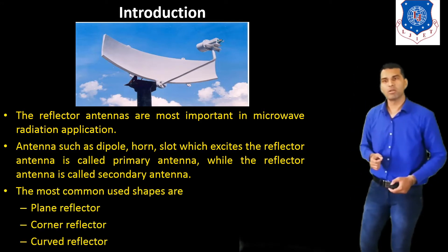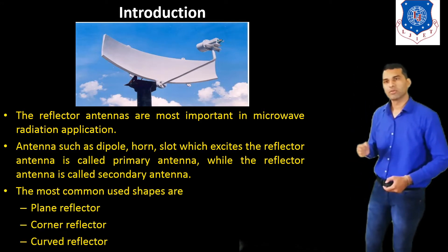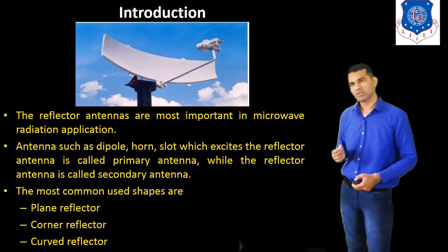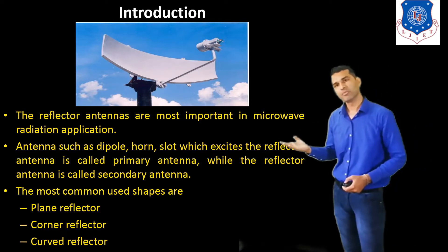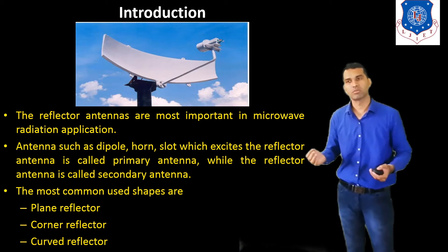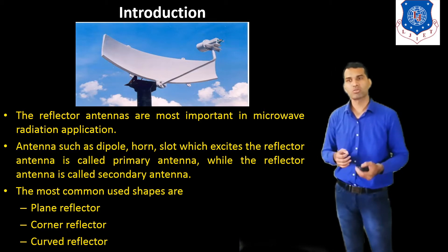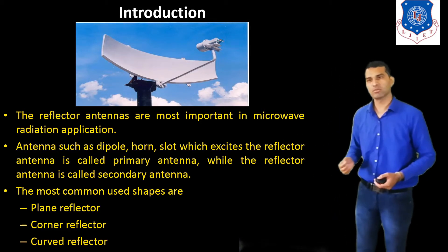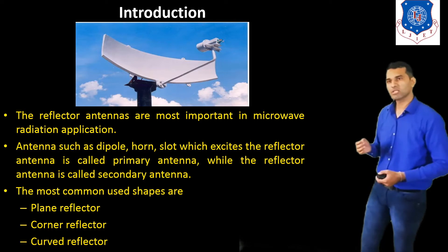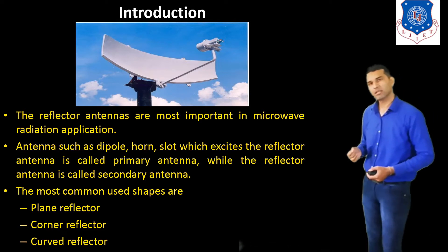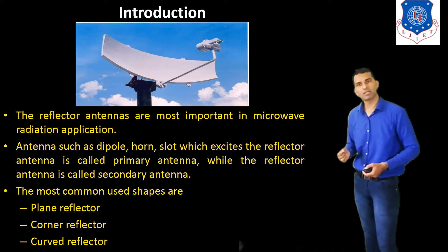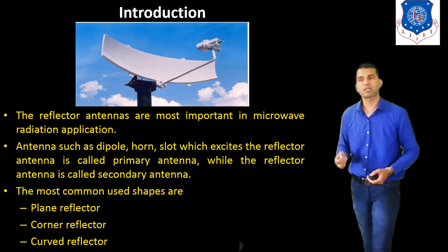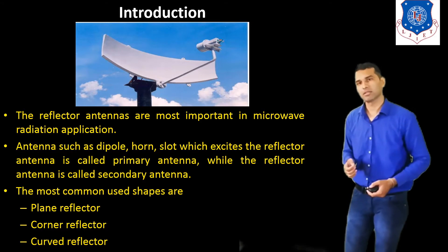The most common shapes used in the reflector antenna — there are different shapes used, but most commonly these three shapes are used. First one is the plane reflector, the second one is the corner reflector, and the third one is the curved reflector.